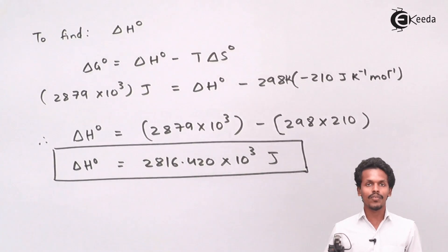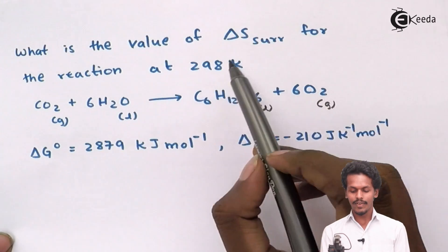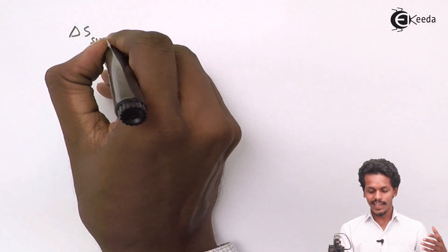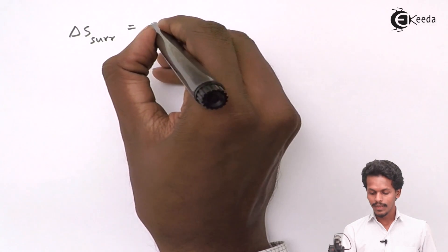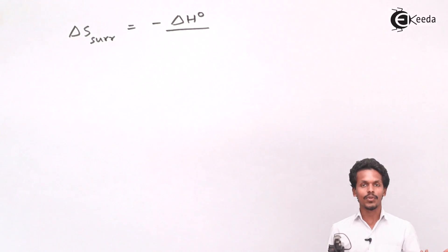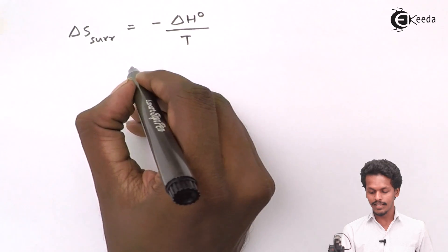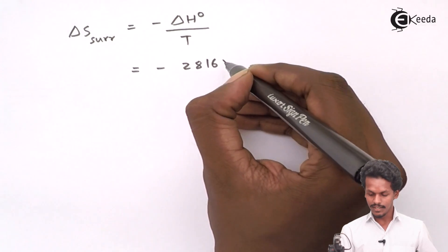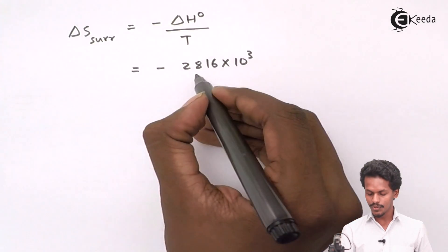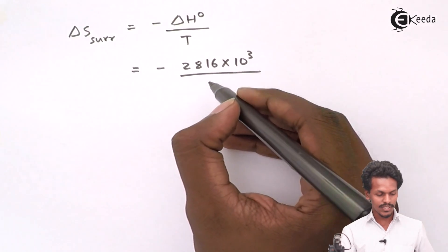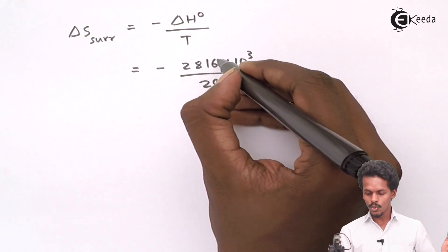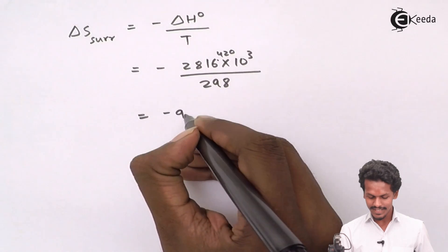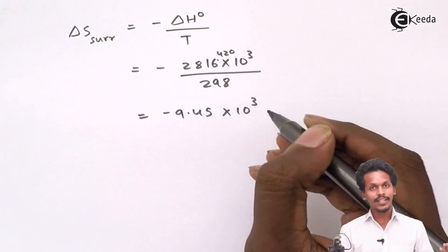Based on delta H⁰, we can now calculate delta S surrounding. Delta S surrounding = −delta H⁰ / T = −2,816,420 / 298 ≈ −9.45 × 10³ Joules per Kelvin per mole.